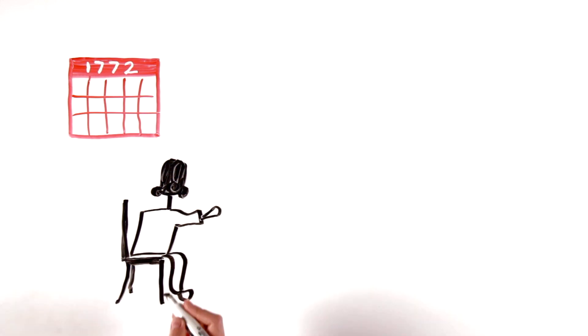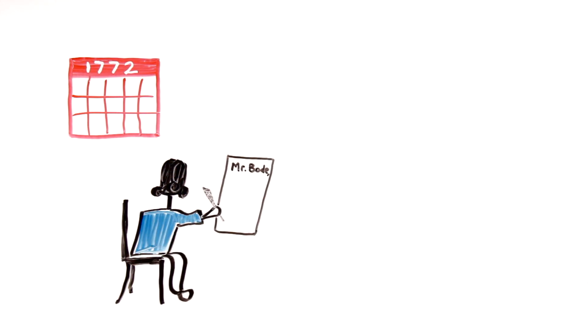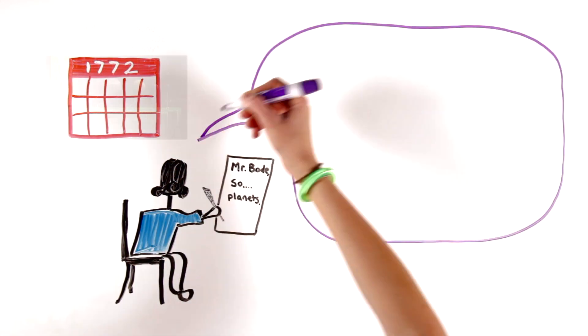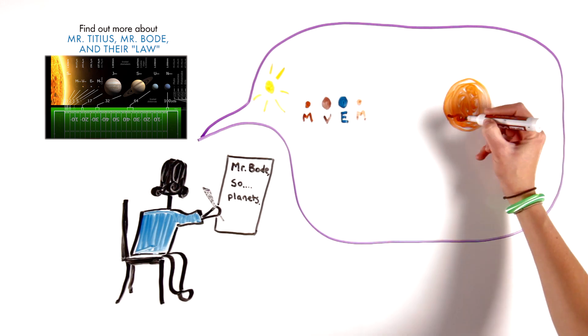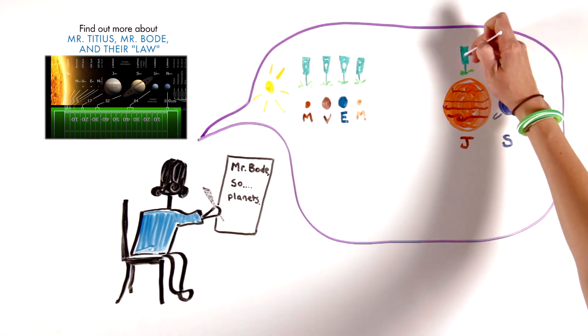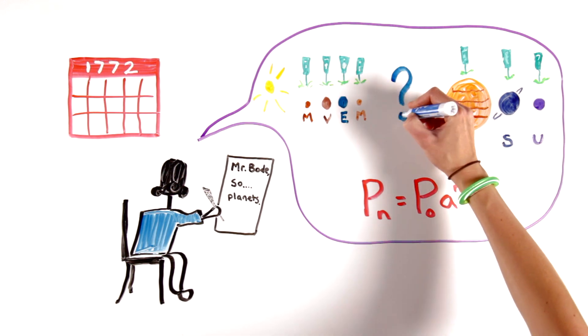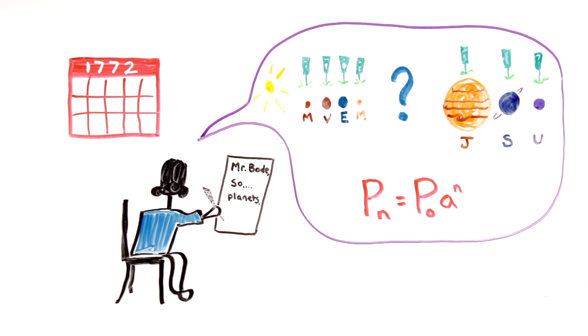Mr. Titius wrote to Mr. Bode in 1772 about the relationship between the average distances of the planets from the sun. He fit all known planets into a series of predictable distances from the sun, but astronomers noticed that a gap seemed to exist between the orbits of Mars and Jupiter.